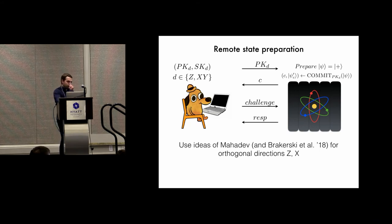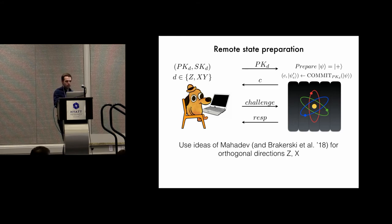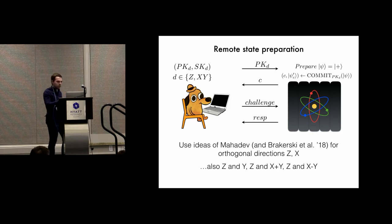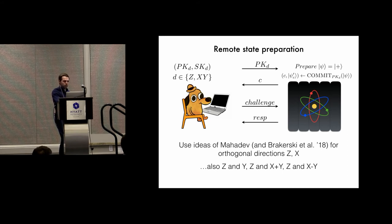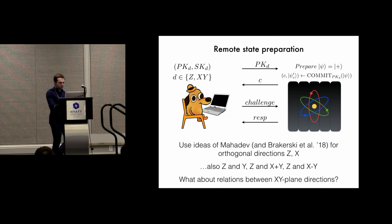Let me give you some ideas about how we prove that this works. We can use similar ideas to those used by Mahadev and also Brakerski et al. in a certifiable randomness paper, to certify that the prover is correctly performing measurements in the x and z directions. If we look more closely, what Mahadev's scheme and this other scheme are actually doing is certifying orthogonal directions — directions on the Bloch sphere that are perpendicular to each other. So we can use this to certify not just z and x, but also z and y, z and x plus y, and z and x minus y — basically z and all the directions that lie in the equatorial plane. But this leaves a question about directions in the xy plane that are not necessarily orthogonal to each other.